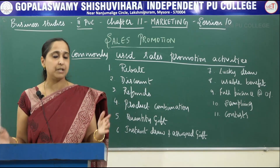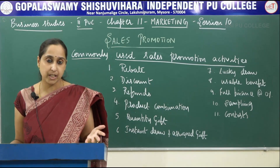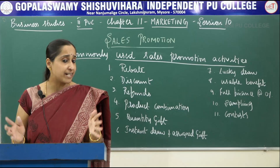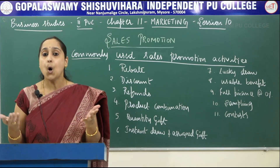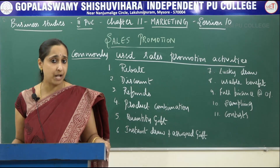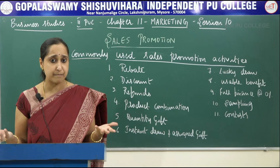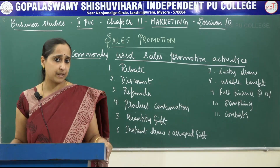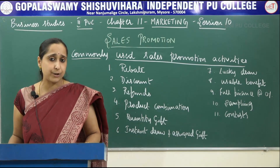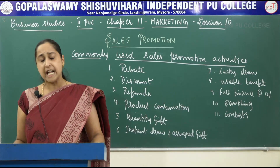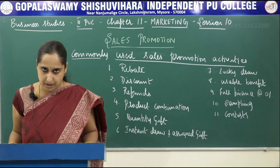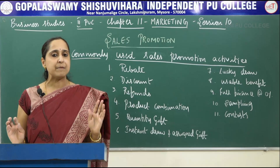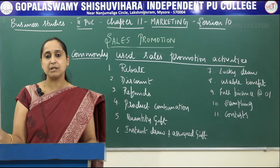Next is usable benefit — for example, if you purchase goods worth rupees 5,000 you may get a voucher worth rupees 5,000 free, or a holiday voucher, or a discount voucher on garments above 2,000 rupees. Next is full finance at 0 percent — many marketers of consumer durables like TV, fridge, and washing machine offer installment schemes to customers.